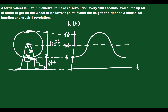The last thing we have to label on this graph is the period. We know you make one revolution every 100 seconds. So at the end, you must be at 100 seconds, meaning at your maximum you're going to be at 50 seconds. When you're at your average — that 36-foot mark — you're going to be at 25 seconds and 75 seconds. I'm just dividing 100 into four sections: 0 to 25, 25 to 50, 50 to 75, 75 to 100.